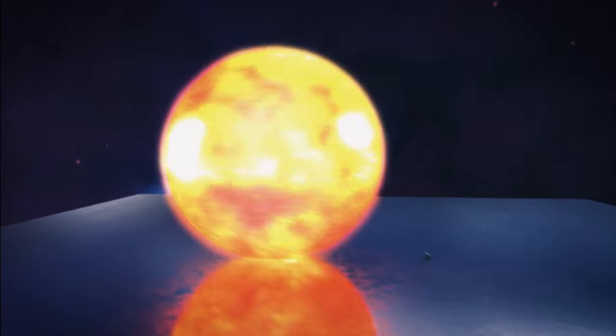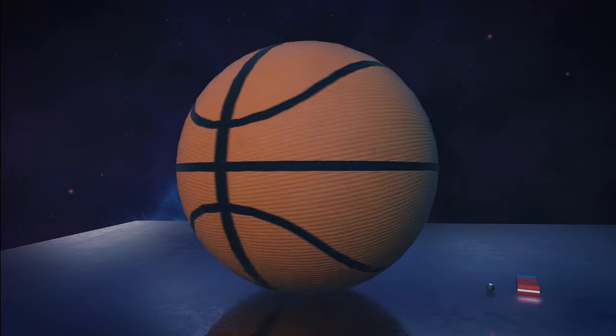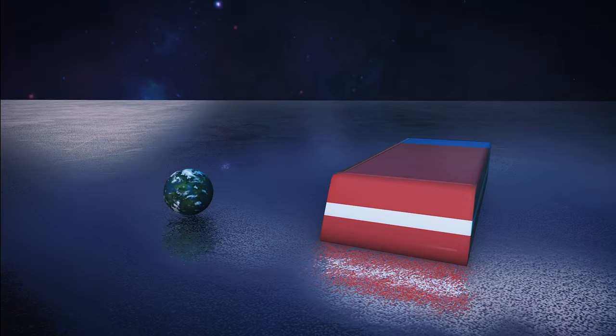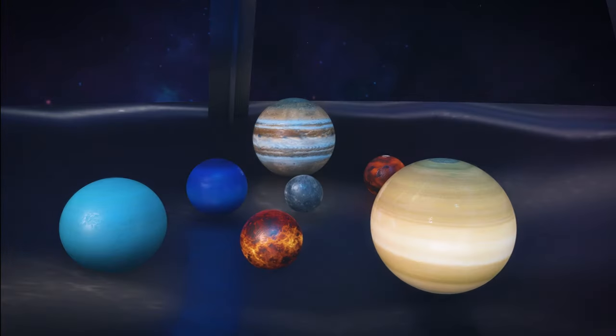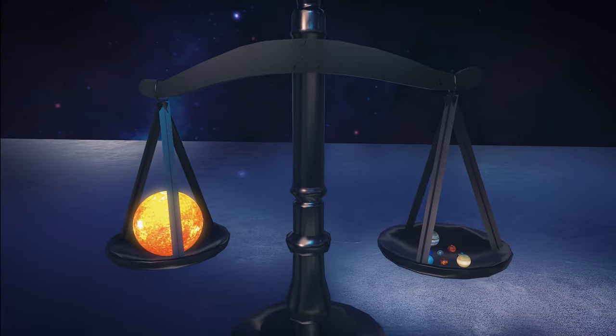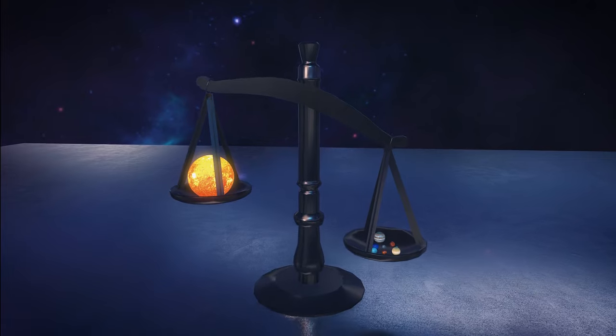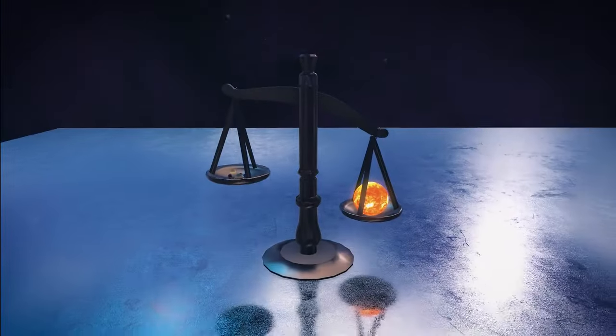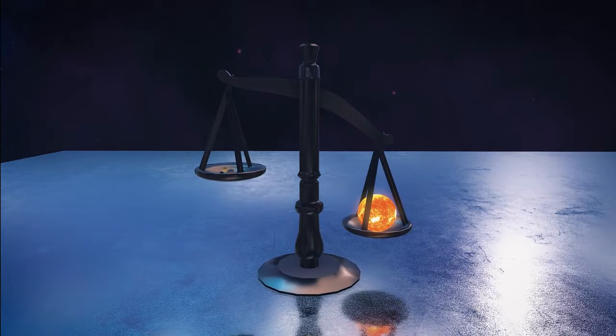That means if you think of the sun like a basketball, Earth would be half the size of a pencil eraser. If we put all the planets on one side of a scale and the sun on the other, the planets wouldn't stand a chance. The sun makes up 99.9% of all the mass in the entire solar system.